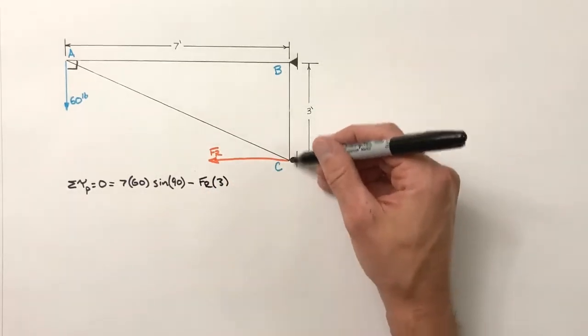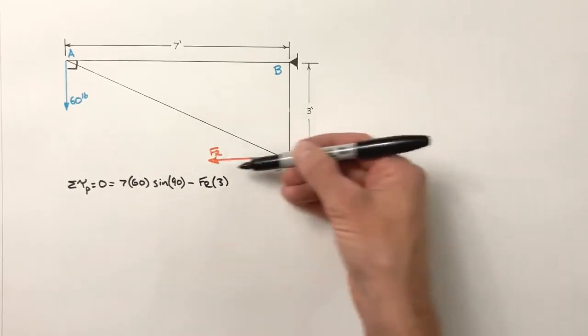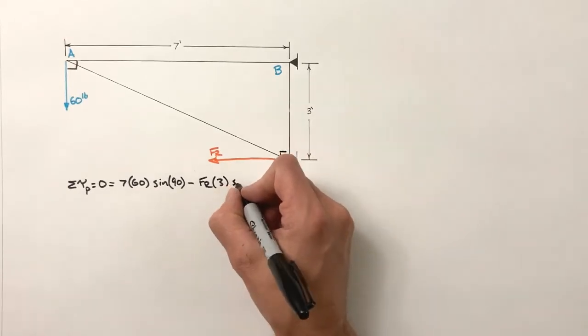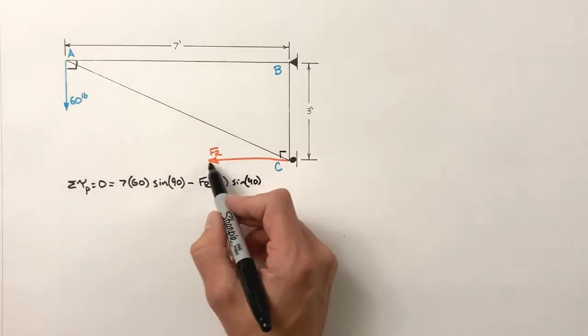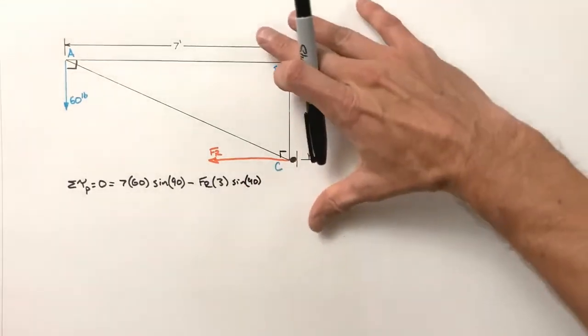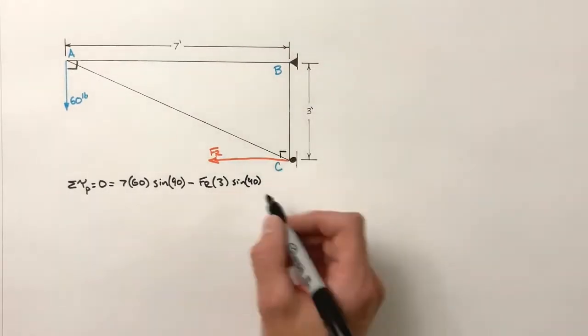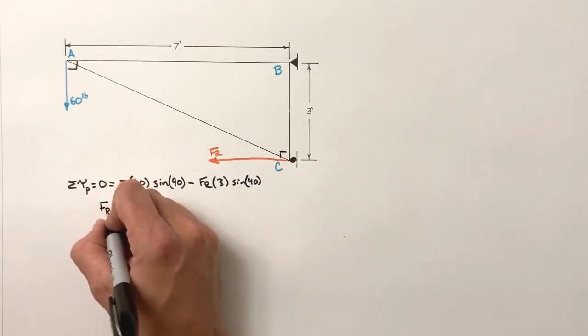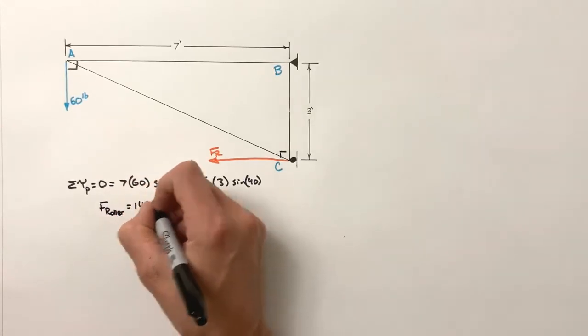And realize the roller is free to move up and down. So the force by the roller must be in the horizontal plane. That means whether it's to the right or the left, it's going to be 90 degrees. Now we can make a very educated guess in knowing that this roller is going to be pushing to the left here because it has to produce torque that's clockwise relative to this pin. So if we go through and we solve for the force by the roller here, we find the force by the roller is 140 pounds.